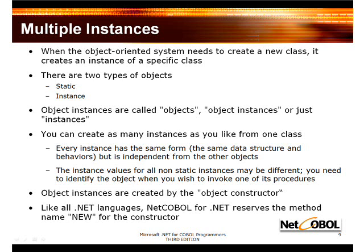Now that we have that critical relationship sorted out, let's talk about instances. There are two types of objects: static and instance objects.